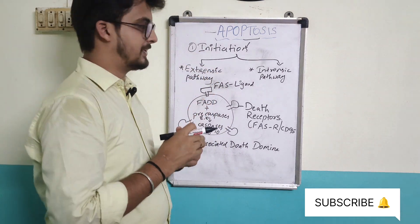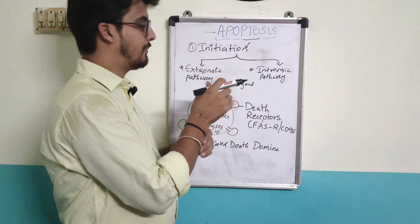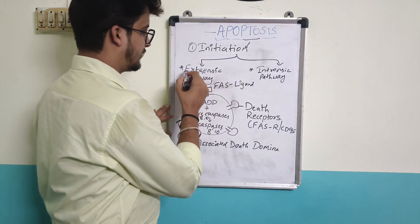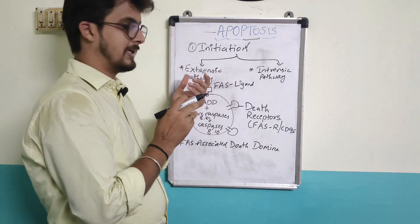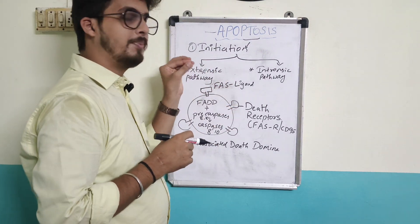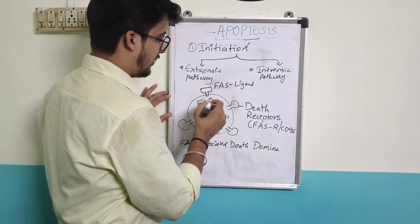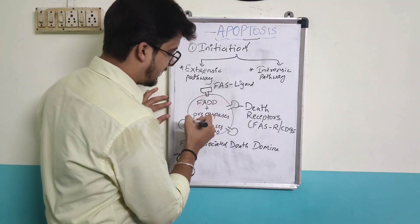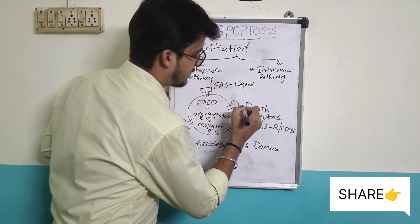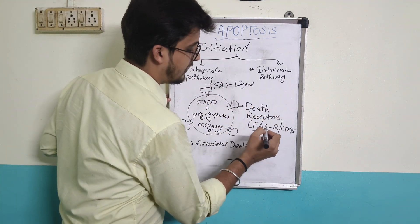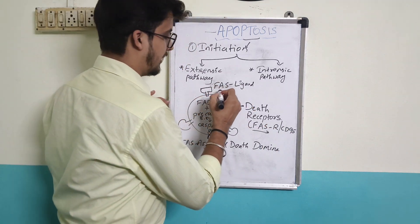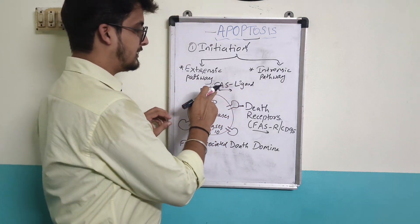The first stage is initiation. In the initiation stage, there are two types of pathways: the first is the extrinsic pathway and the second is the intrinsic pathway. In the extrinsic pathway, as the name suggests, a stimulus comes from outside. Each and every cell already has a death receptor. The death receptor is called Fas-R receptor or CD95.